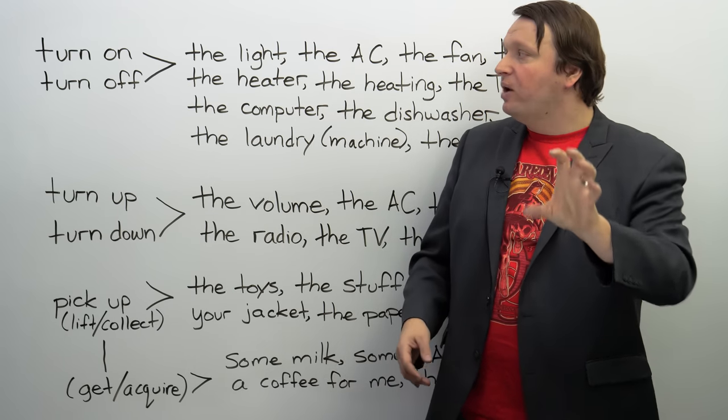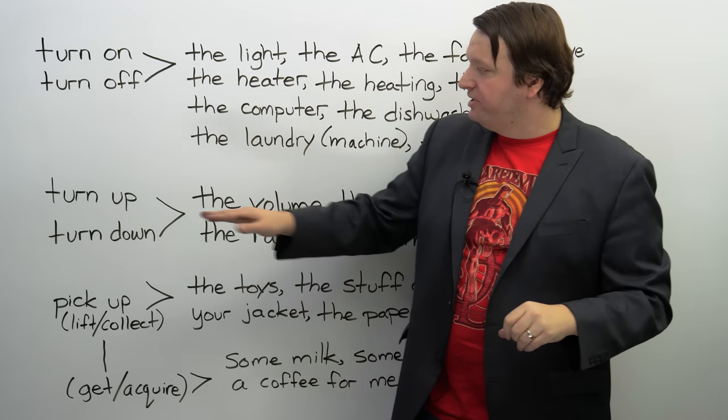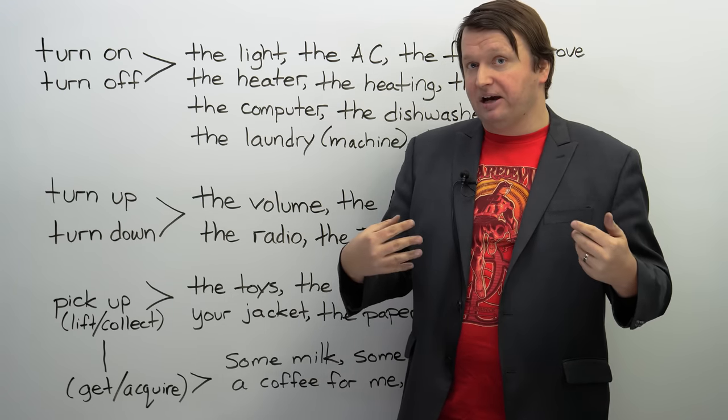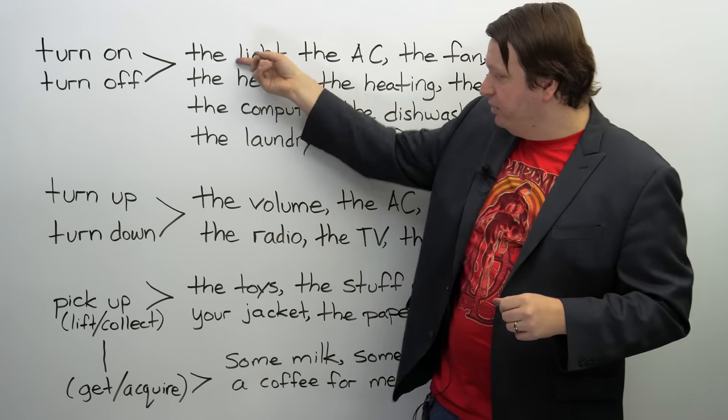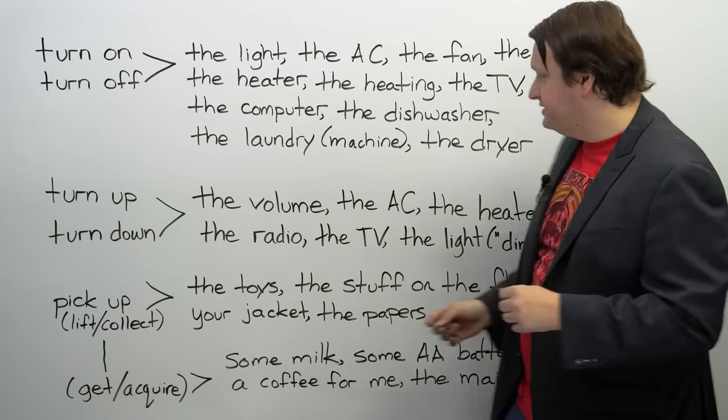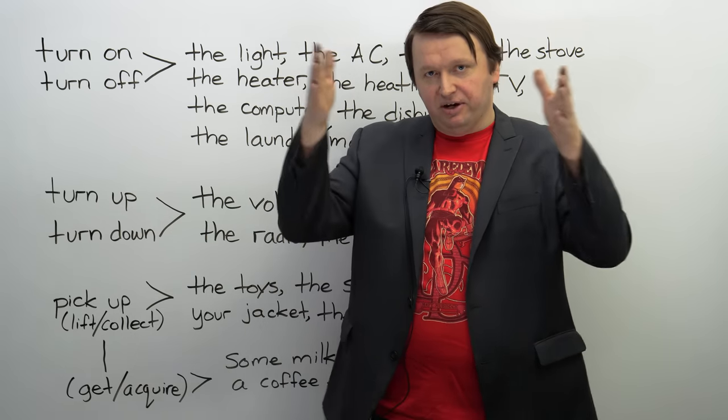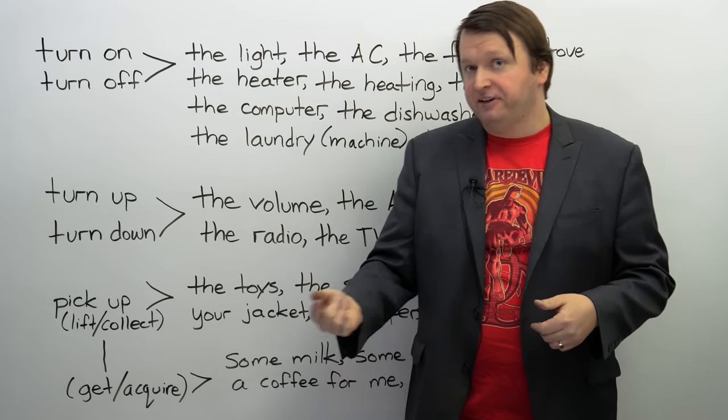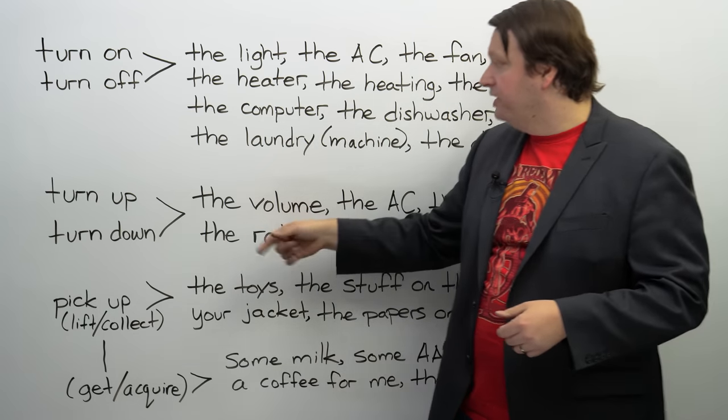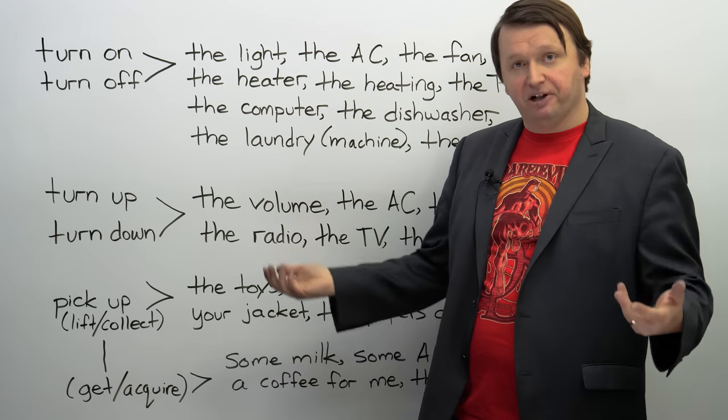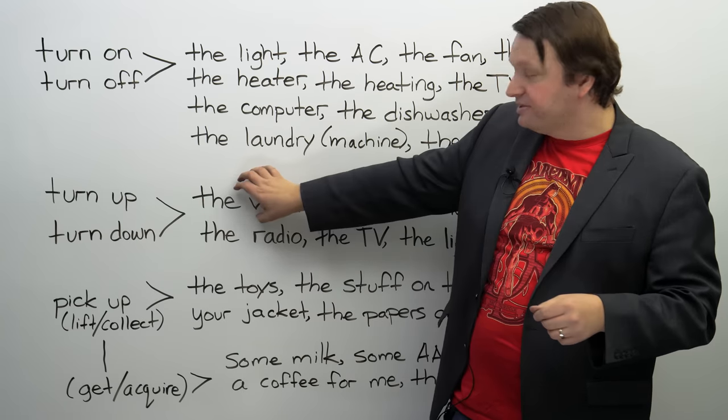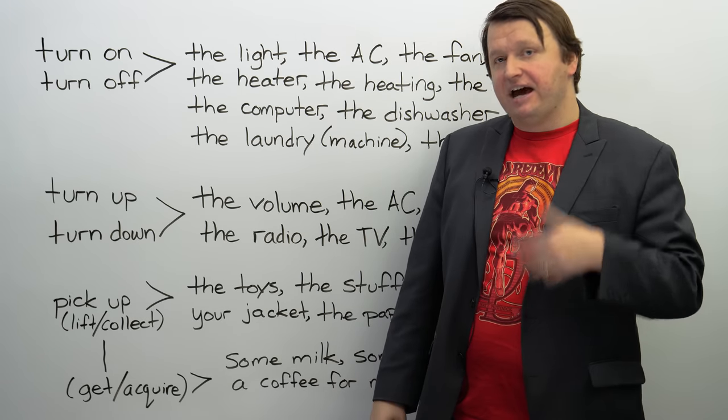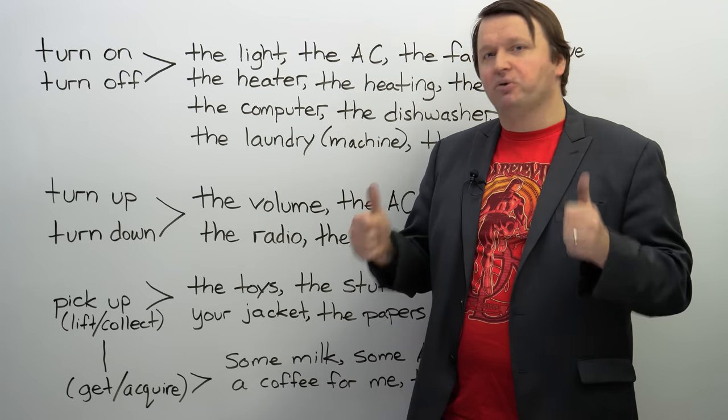Now, before we continue, I also want to stress turn on, turn off, turn up, turn down, pick up, and the other five phrasal verbs you will see, they are all separable. What this means is the object, like, for example, the light, the volume, the stuff on the table, they can go in the middle of the phrasal verb or at the end of the phrasal verb. So, it's possible to say, turn the light off, or turn off the light, or turn the volume up, turn up the volume. So, you can put this in the middle of the phrasal verb or at the end of it. So, we've got five more to go, guys, and after this I think you're going to be quite the domestic king or queen.